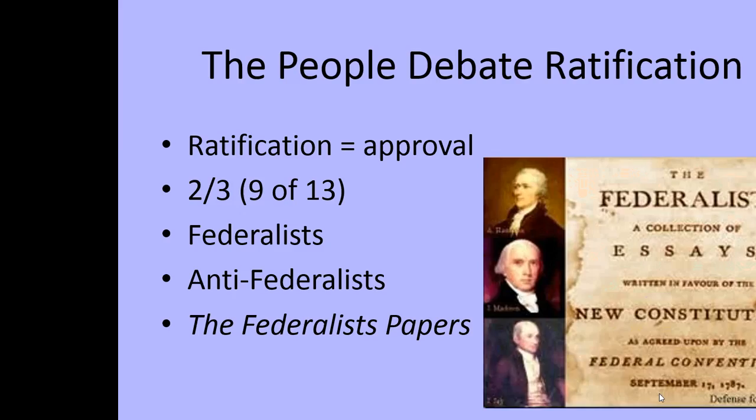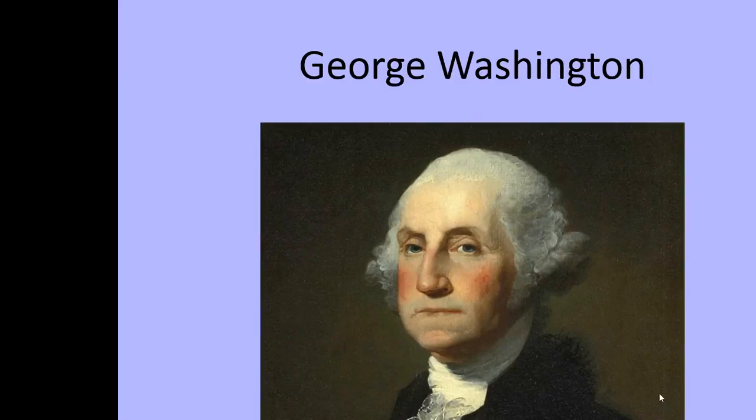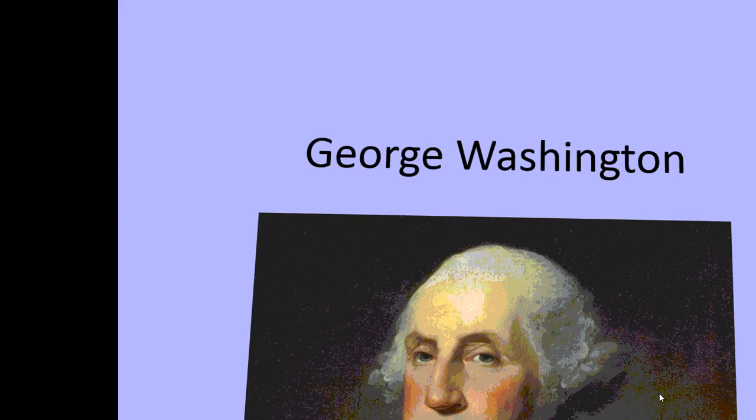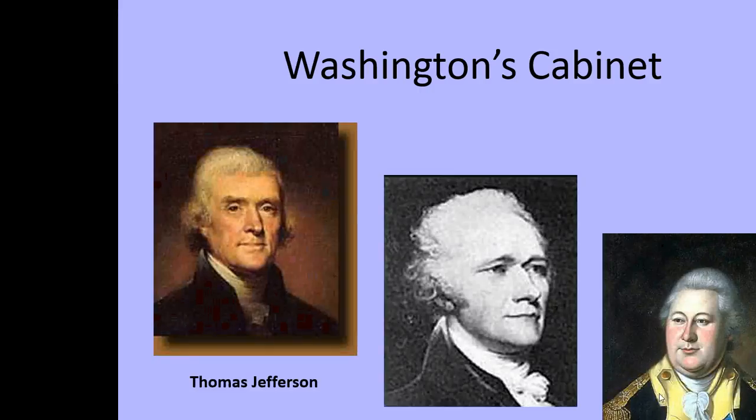George Washington would be selected as the first president, with Adams as his vice president. There was really no election for this — he was just selected as the first president. Washington established the very first cabinet, which you can see on the slide. He established Thomas Jefferson as his Secretary of State, Alexander Hamilton as his Secretary of the Treasury, and Henry Knox as his Secretary of War.